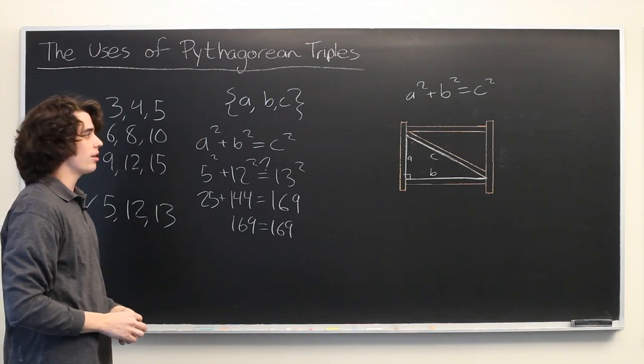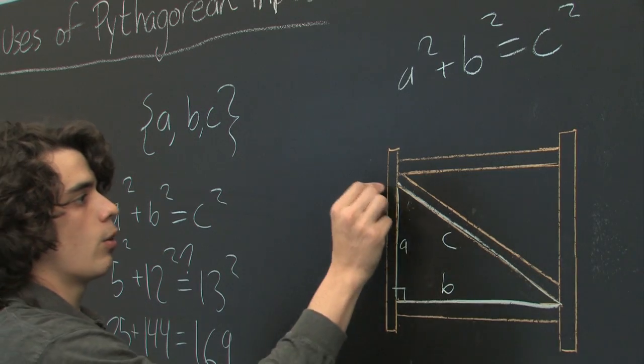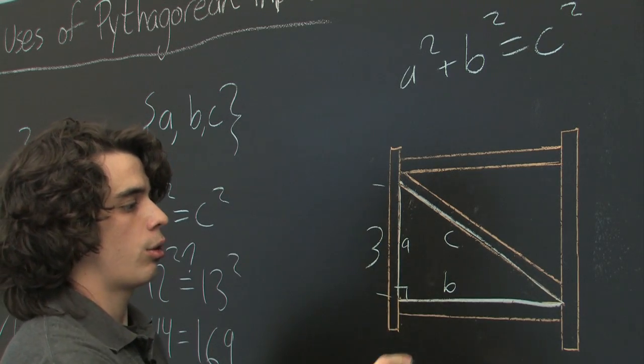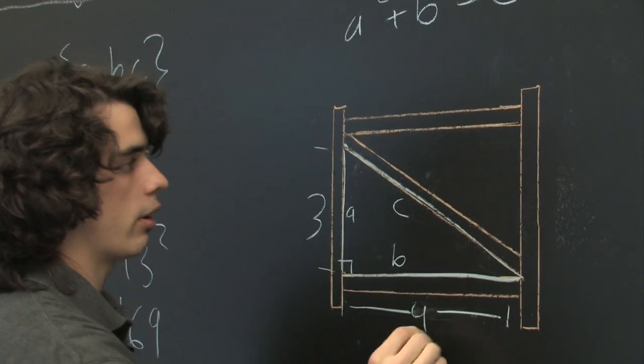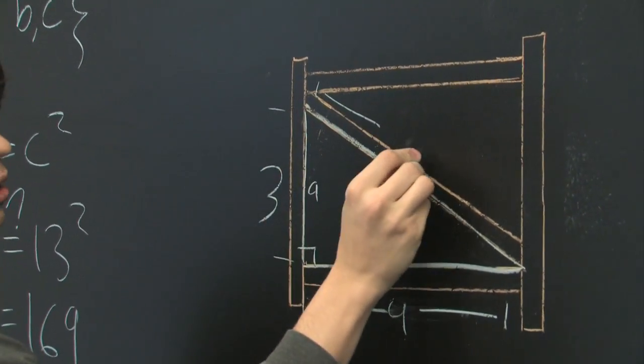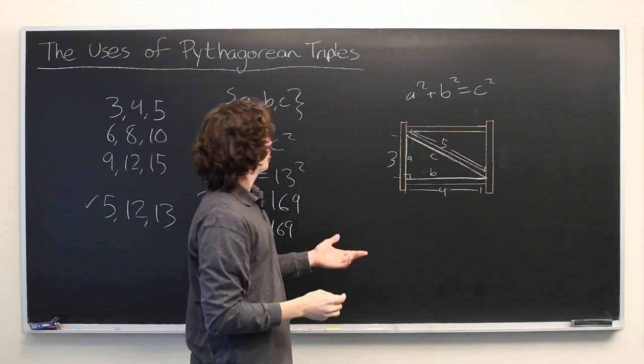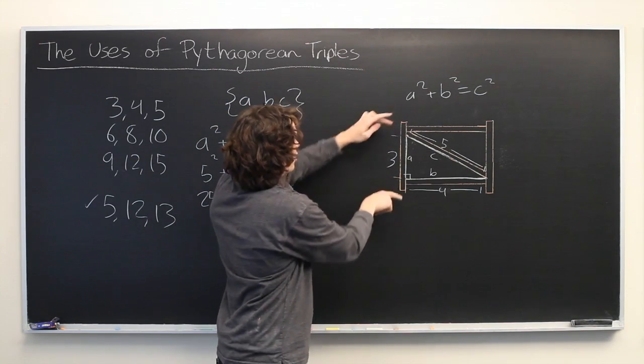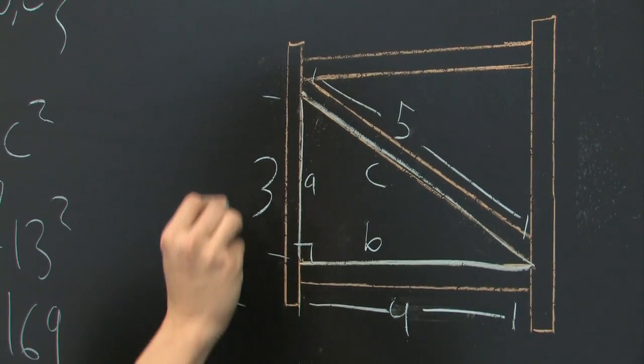But we've got a handy list right here. So what this tells us is that we could do, for example, 3, 4, and then a hypotenuse of 5 feet. And if you want to be slightly more precise, since this isn't the entire length of this post, you might extend this upward a little bit and say that this entire thing is 5 feet.